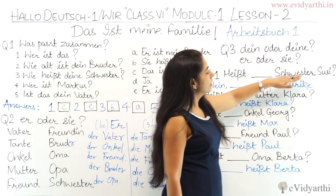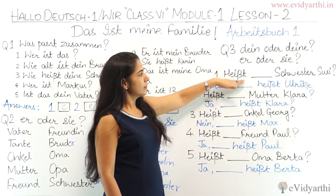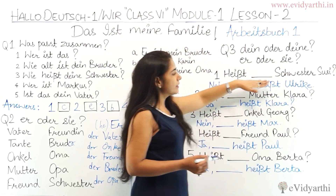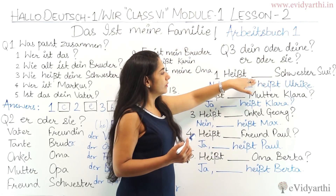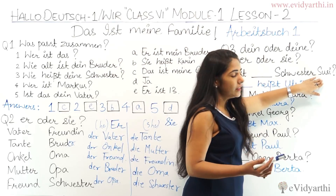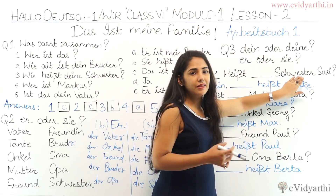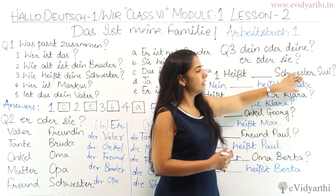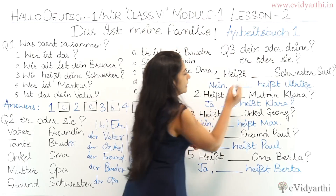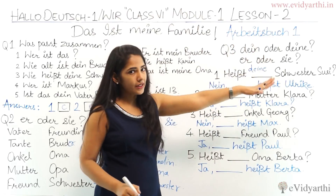'Wie heißt deine/dein Schwester, Susi?' — 'Schwester' is feminine, so the answer is 'deine.' The sentence is: 'Wie heißt deine Schwester, Susi?' meaning 'Is your sister called Susi?'